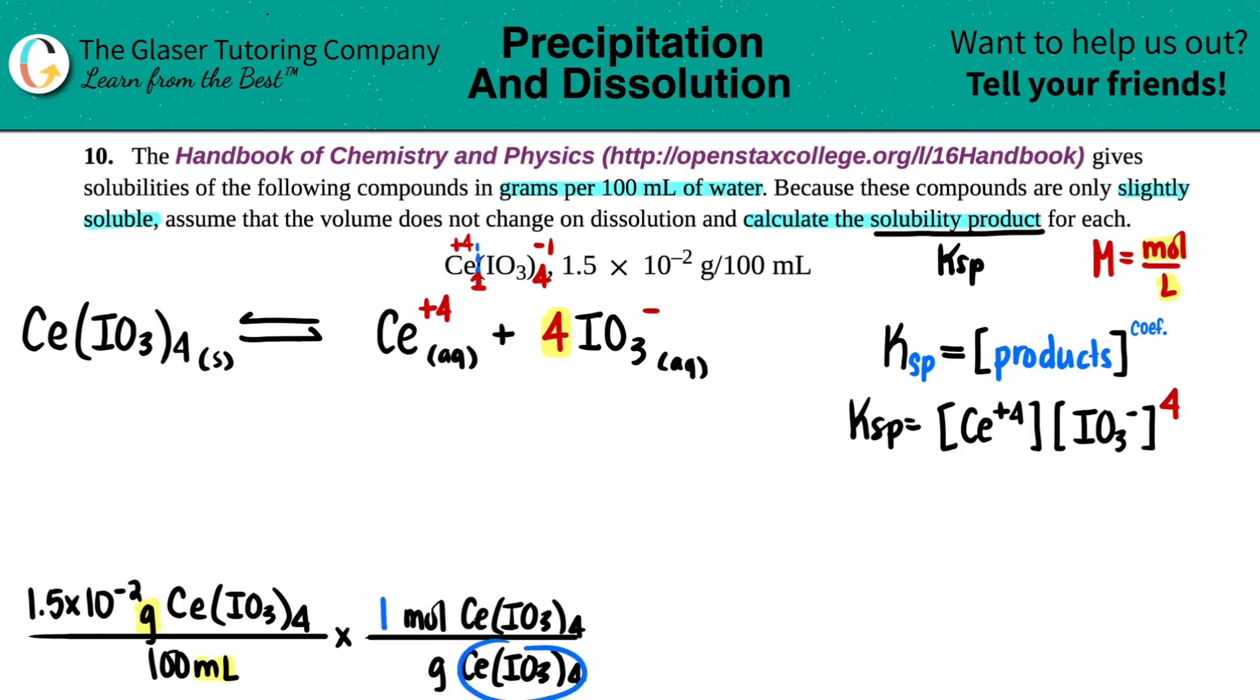This is a gram to mole conversion. That's always found on the periodic table. One mole equals whatever the mass is on the periodic table. So I have one Ce, 140.1 plus four iodines, 126.9 times four, and then I have 12 oxygens, plus 12 times 16. So pretty big compound, 839.7. That cancels out the grams. And now we're left with the moles.